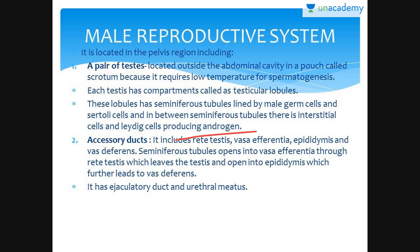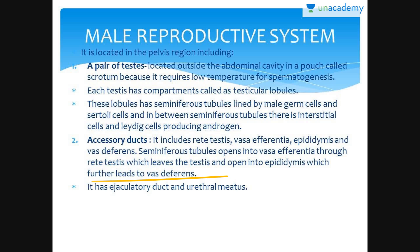Accessory ducts include rete testis, vas deferentia, epididymis, and vas deferens. The seminiferous tubules open into vas deferentia through rete testis, which leaves the testis and opens into the epididymis, which further leads to vas deferens. It has an ejaculatory duct and urethral meatus.